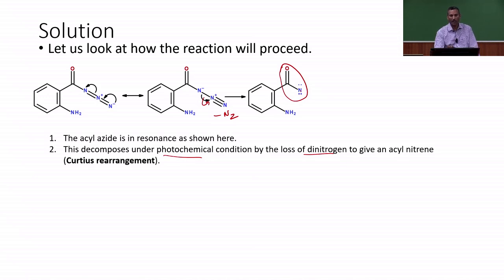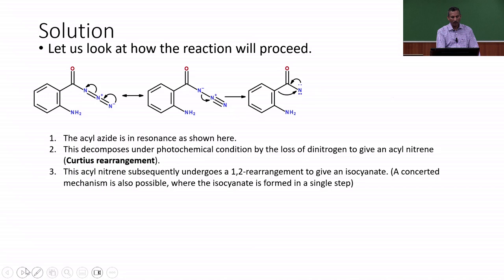Instead of carbon, we have a nitrogen which is having the extra two electrons. That is what is called a nitrene derivative and there is a carbonyl unit attached to that. This is called the acyl nitrene and this acyl nitrene undergoes a Curtius rearrangement. This reaction is a part of Curtius rearrangement.